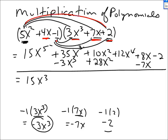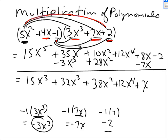Now combining: 35 minus 3 is 32, so plus 32x cubed. 10 plus 28 is 38, so plus 38x squared. Plus 12x to the 4th. 8 minus 7 is 1, so just x, minus 2. The first term gives 15x to the 5th. So the answer is 15x to the 5th plus 12x to the 4th plus 32x cubed plus 38x squared plus x minus 2.